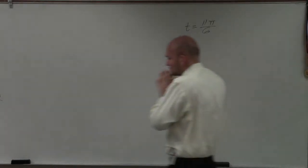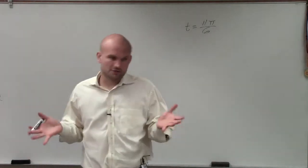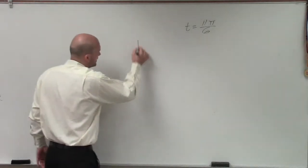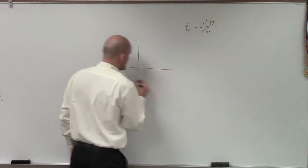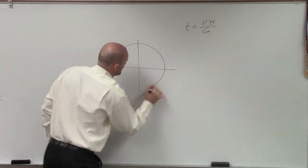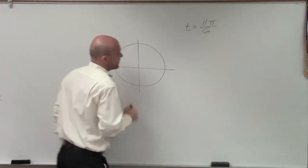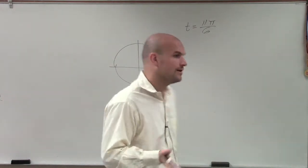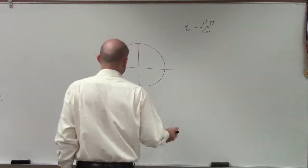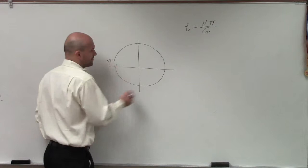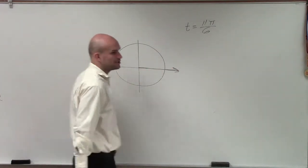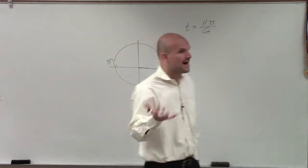This will really help you out. When dealing with an angle like 11π over 6, what I like to do is take my unit circle, because we're trying to determine the points that are on this unit circle. To do that, remember we just talked about halfway around the circle. If I start here at my initial side and rotate halfway around the circle, that's π radians.